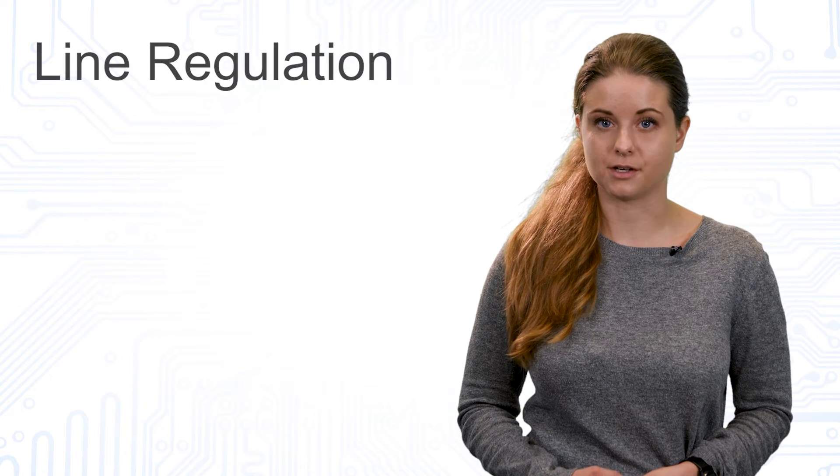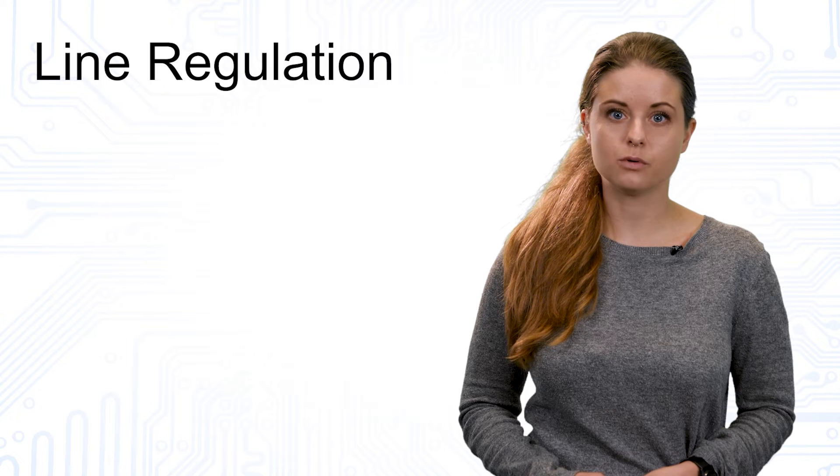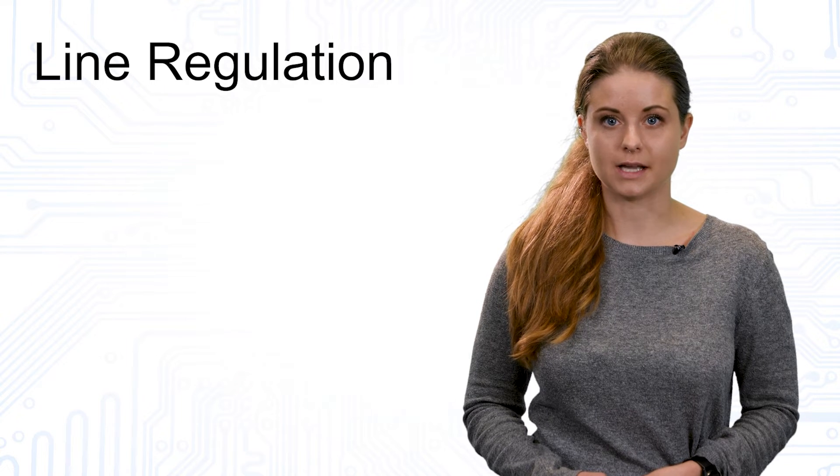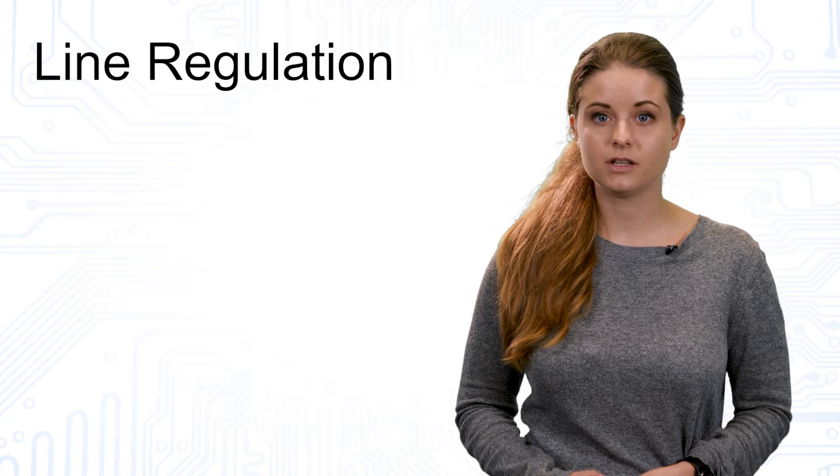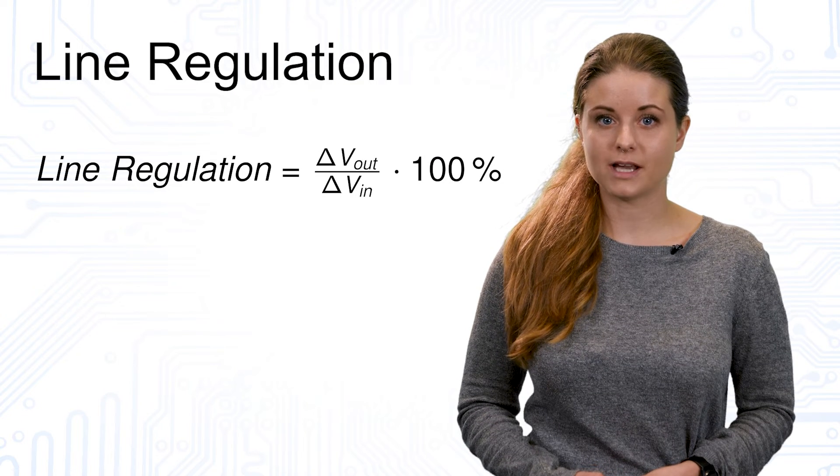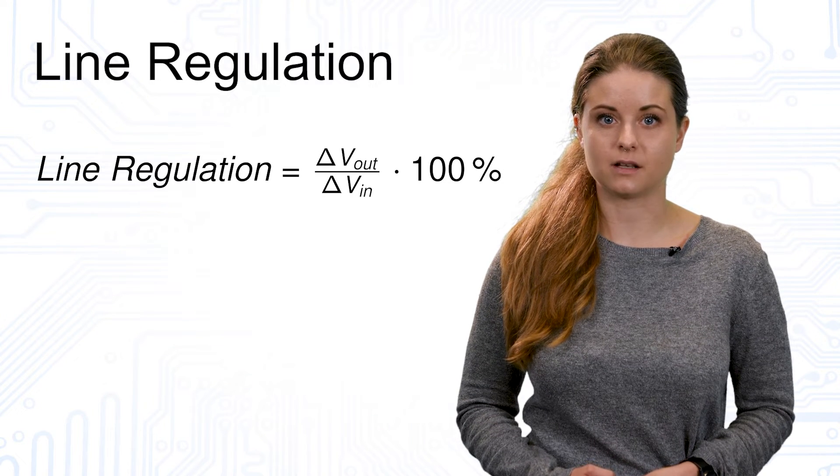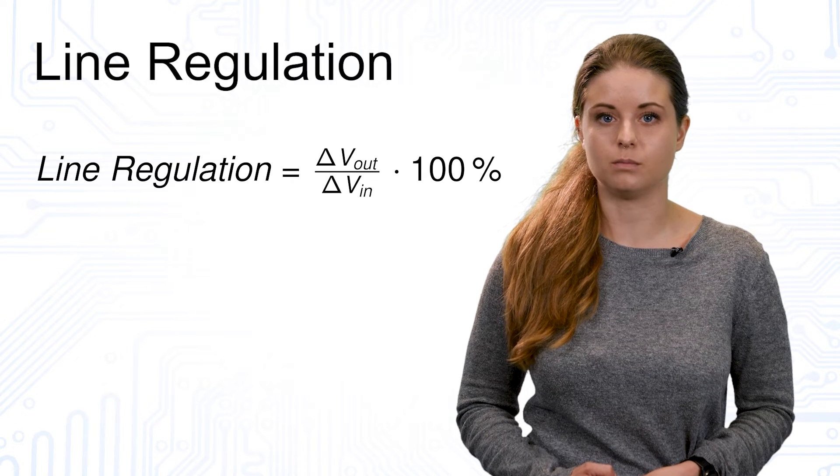Next we want to explain the line regulation. This is a measure how stable the output voltage is when the input voltage changes. Ideally, the output voltage should always remain the same, even if the input voltage changes. As the line regulation is described by ΔV_out to ΔV_in times 100%, low values are desirable.